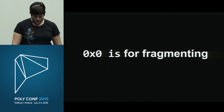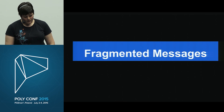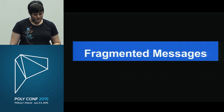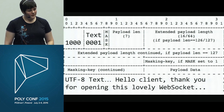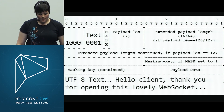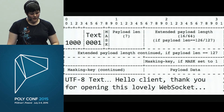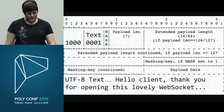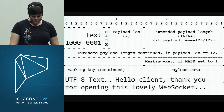Let's look at a single-frame text message. The FIN bit is 1 because it's the last frame. The reserved bits are 0. The opcode is 1 for text. We fill in the payload length, and at the end we have the payload data, which is just some text. This is an entire message in a single frame.